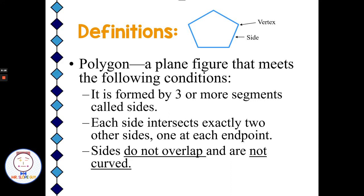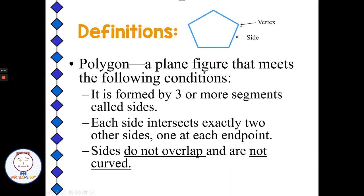A polygon has the following conditions: it has to be formed by three or more segments called sides. Up here we have a pentagon, and each of these places where each side meets is called a vertex. Each side intersects exactly two other sides, one at each endpoint, so it can't overlap or crisscross — it can only meet at one point.